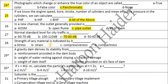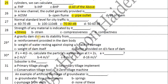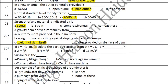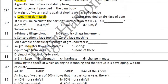The strength of any material is indicated by its stress. A gravity dam derives its stability from the weight of the dam itself. If s = 40 square units, we can calculate the particle acceleration at t = 2 seconds — the acceleration is 2 meters per second squared.